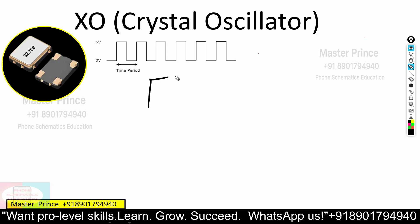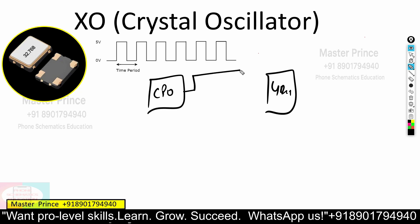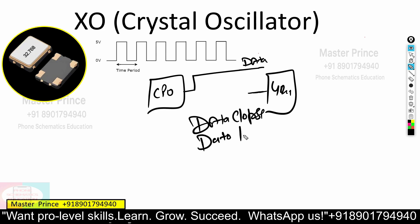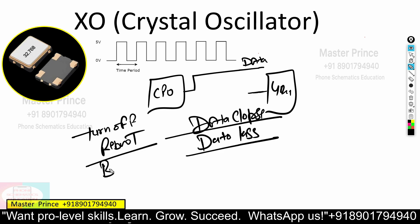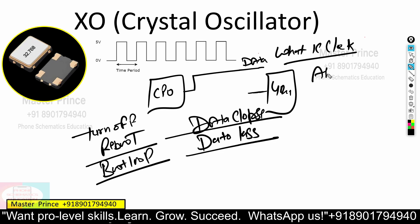For example, the CPU wants to communicate with the graphics IC. If the CPU sends a logic high signal to the display IC but the display IC is not ready and remains in logic low, it cannot read the data. This data collapses — meaning data loss — and due to this data loss, your phone or PCB turns off, reboots, or gets stuck in a boot loop.